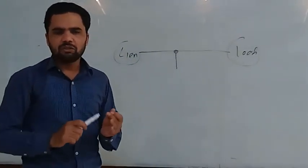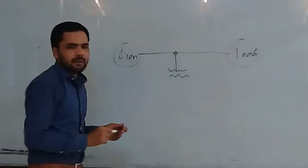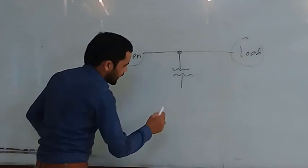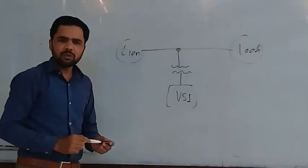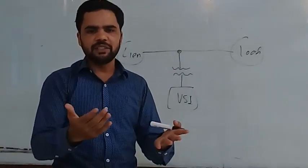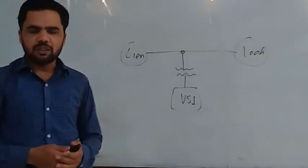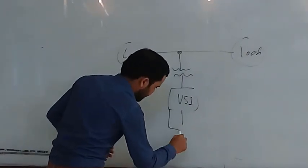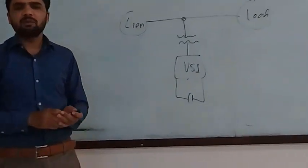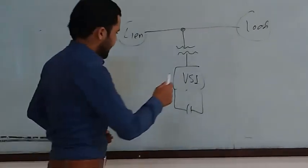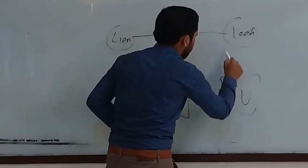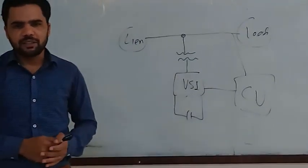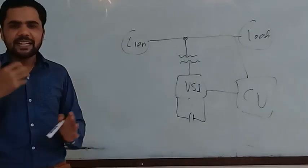The basic components of the static synchronized compensator are: first, this is the basic coupling transformer, which is used to connect the STATCOM signal with the transmission line signal. This is the voltage source inverter, which is used to convert the DC voltage into AC voltage. That AC voltage is provided to the transmission line to compensate the reactive power and to maintain the stability of the power system. Next component is the DC source, which provides the DC voltage to the voltage source inverter. And this is the basic control unit, which is used to reduce the errors and to minimize the time to regain the normal operation of the power system.